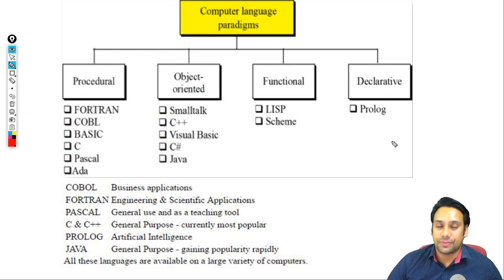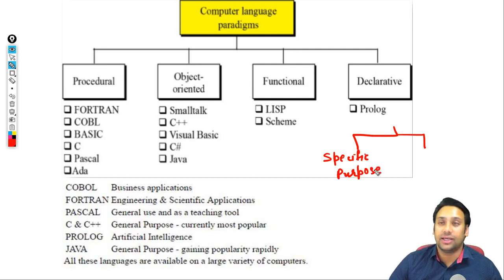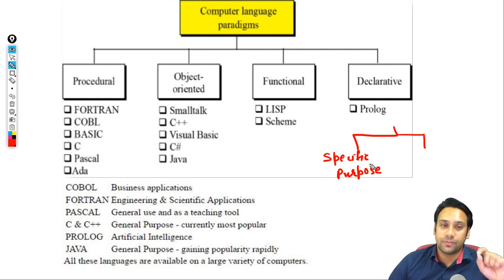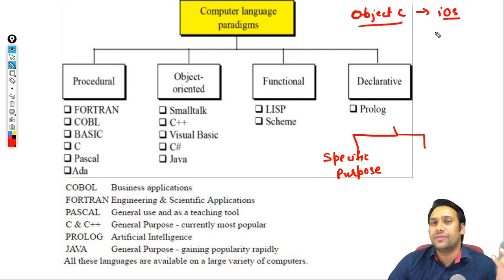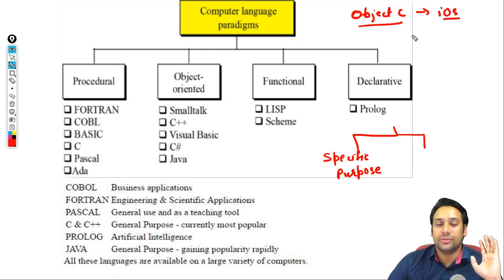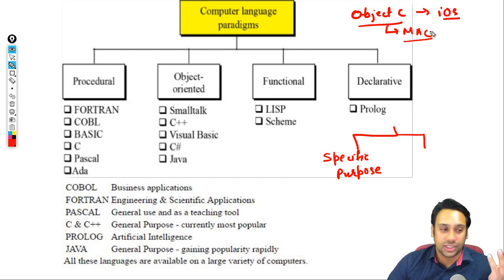Generally, there are two kinds of programming languages. Number one: languages designed for a specific purpose — designed to work on specific hardware or a specific type of software only. For example, Objective-C is used to design iOS applications; we mostly use Objective-C for iOS and Macintosh operating system applications.